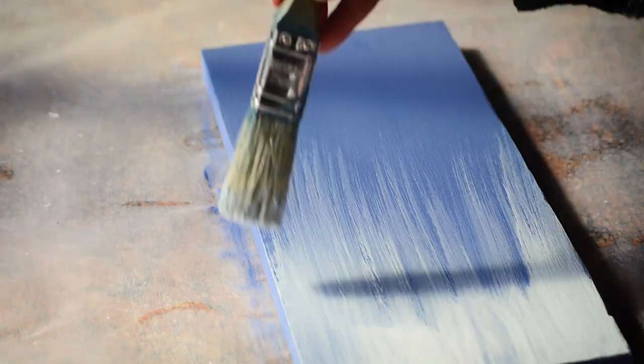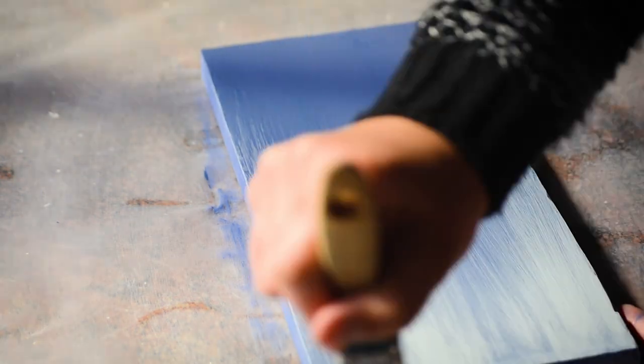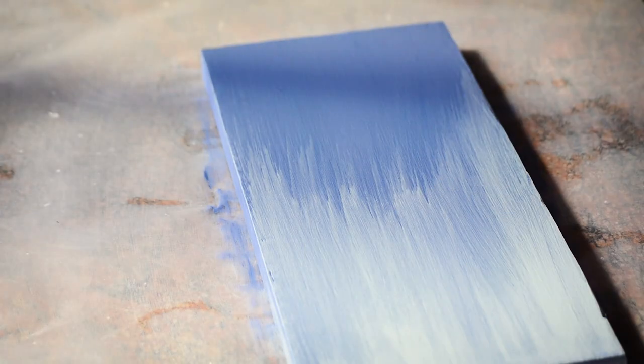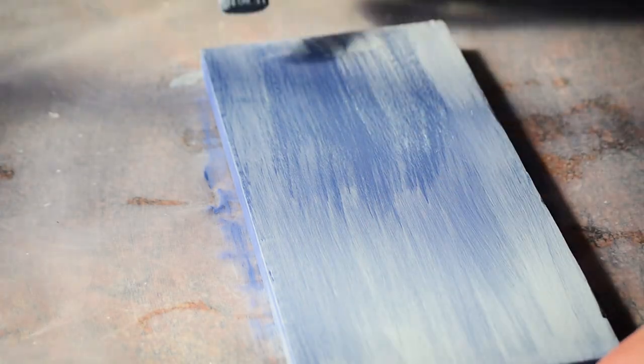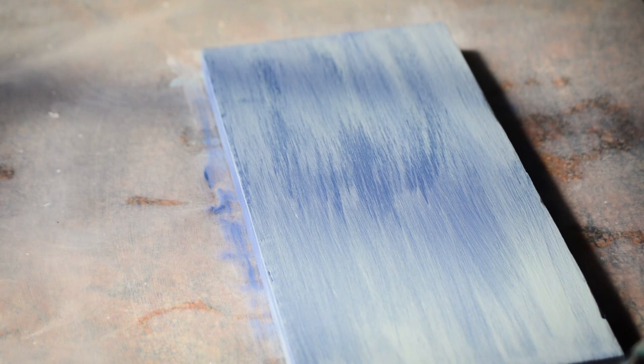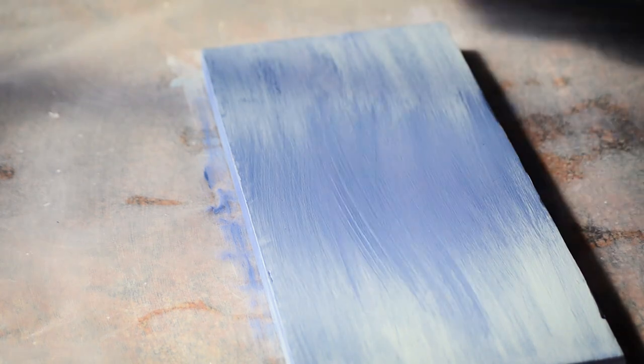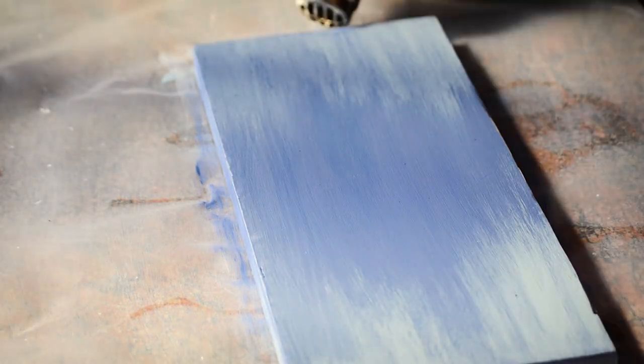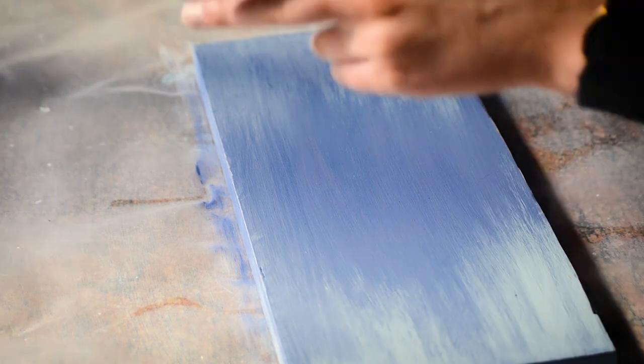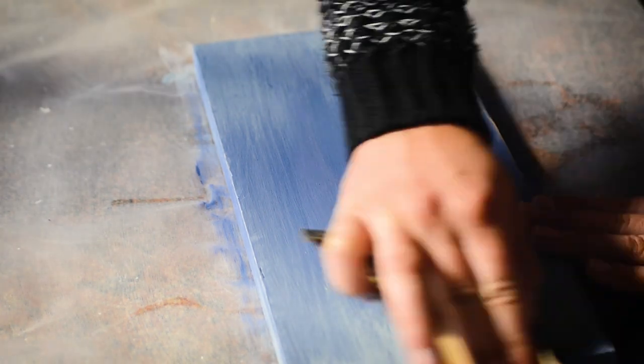I then used white chalk paint to accent the blue from the sides and rubbed off some in the middle to expose the blue. Dry this paint and then sand your plank to give it a vintage old vibe.